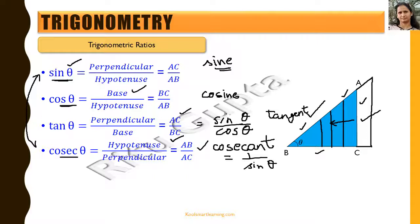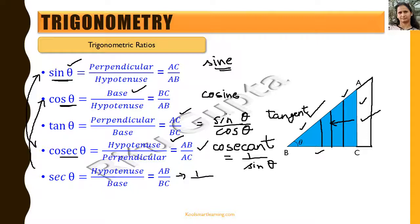The next ratio is sec theta, which equals hypotenuse by base — that is AB by BC. As you can see, this is the reciprocal of cos theta, so sec theta equals 1 divided by cos theta. Its full form is secant.